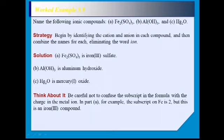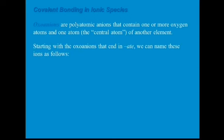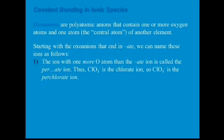Now let's look at covalent bonding in ionic species involving oxygen. Polyatomic ions that contain one or more oxygen atoms and one central atom of another element are called oxo anions. Here is a tip you can use as a guide to name these ions properly, starting with oxo anions.